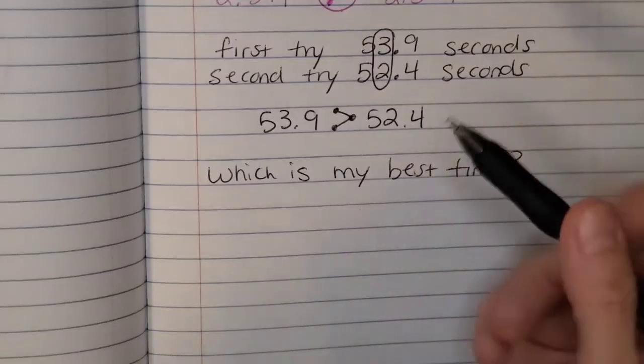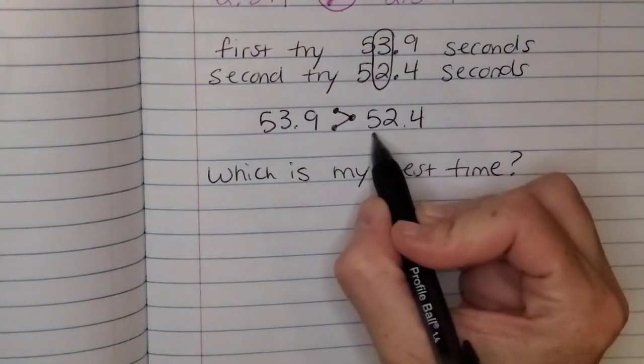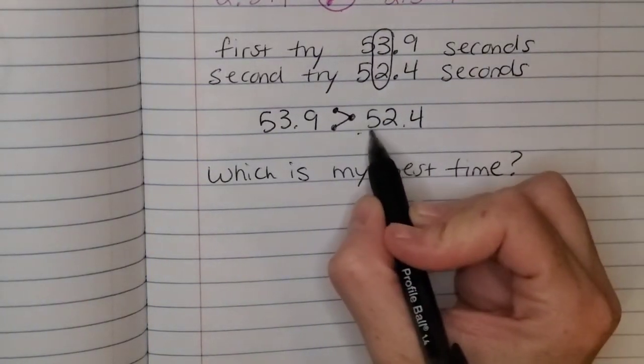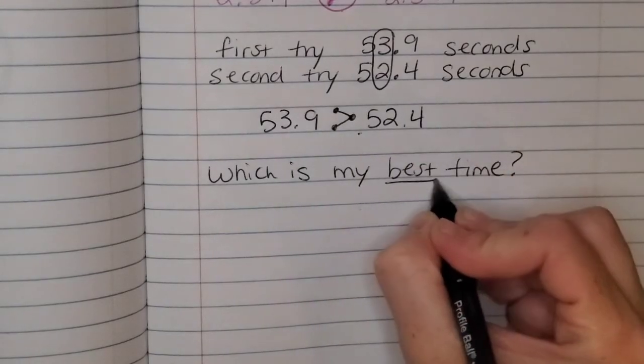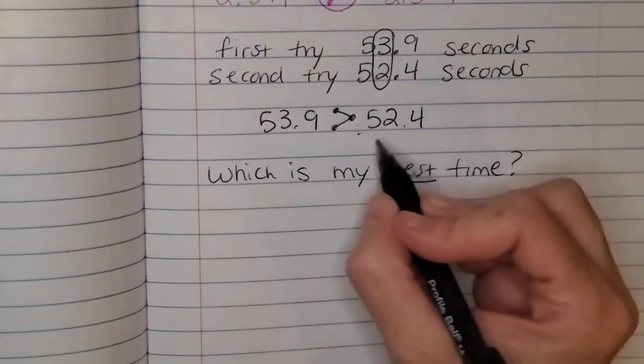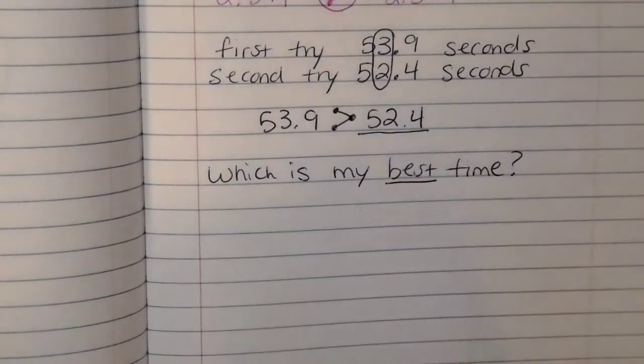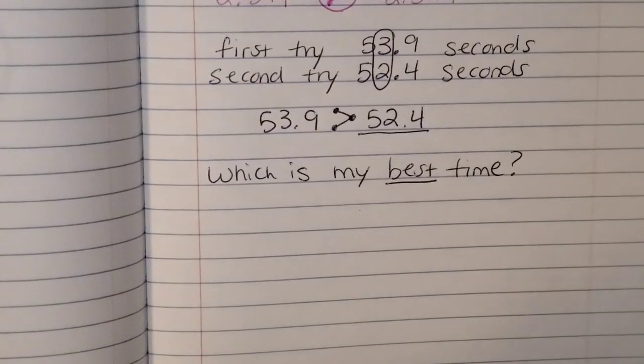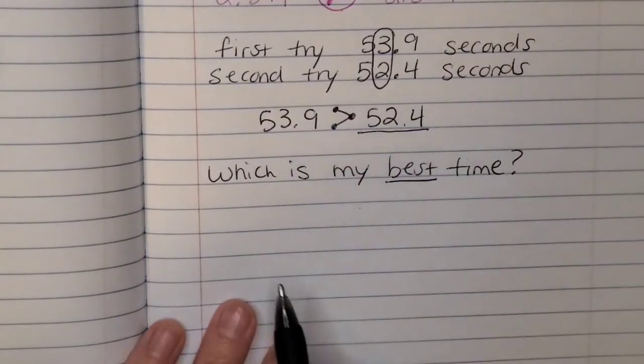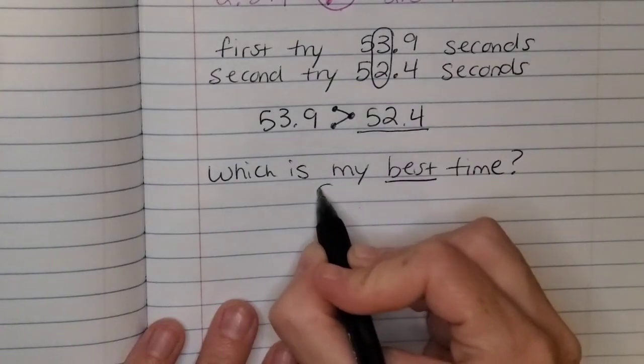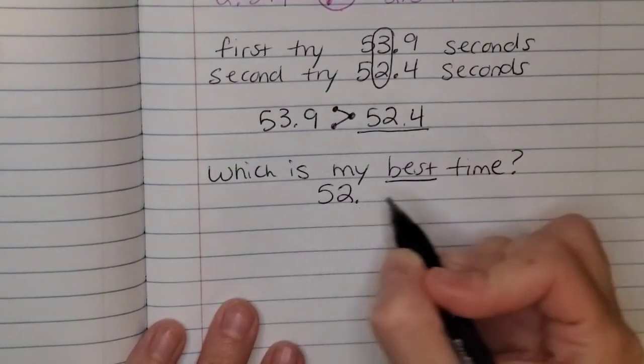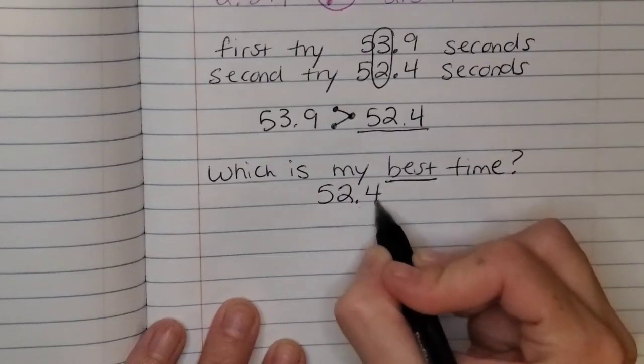Okay, so the answer to that is not what maybe you might think that, oh, this is greater, that means it must be best. But I actually want a smaller time because I want to be able to finish the course the fastest or the least amount of time. That means I got to it quicker. So my best time was 52 and 4 tenths.